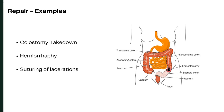These are examples of procedures coded under the root operation repair: colostomy takedown or colostomy reversal, herniorrhaphy or suturing of a hernia, and laceration repairs using sutures. For hernia repair specifically, if the procedure is performed along with placement of any mesh material, you cannot code repair as the root operation — it has to be coded as supplement instead. Hernia repair without any mesh placement should be coded as repair.